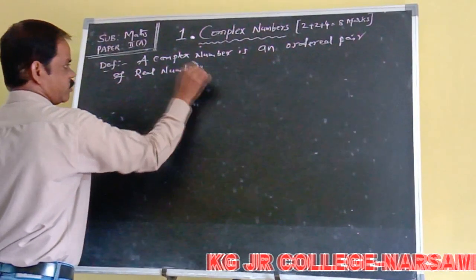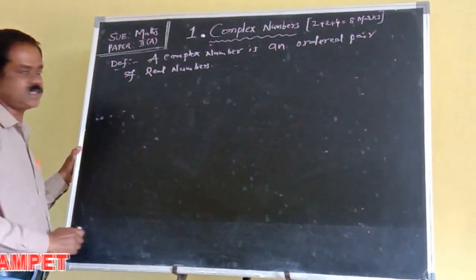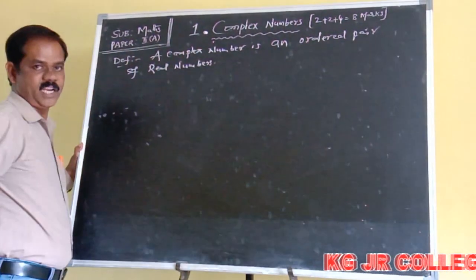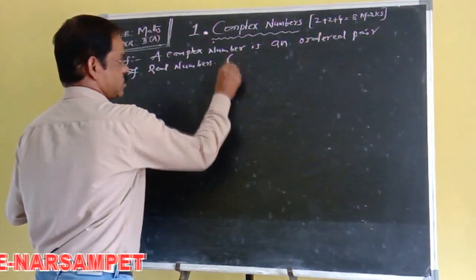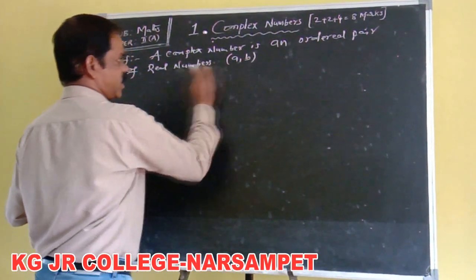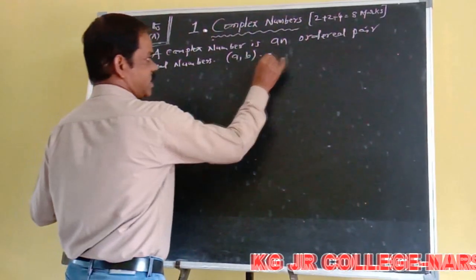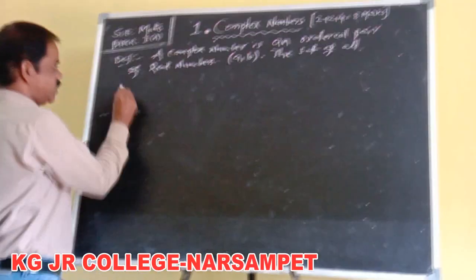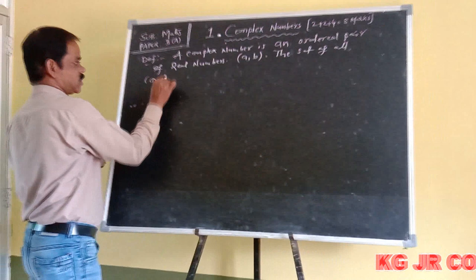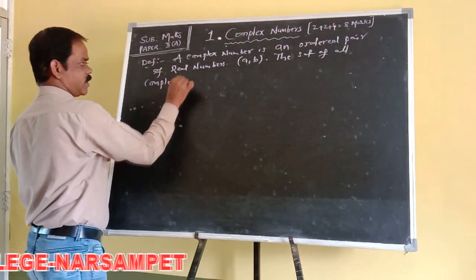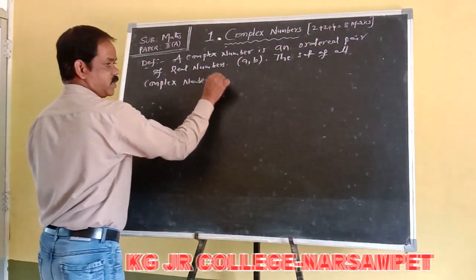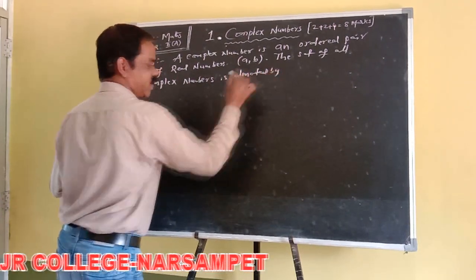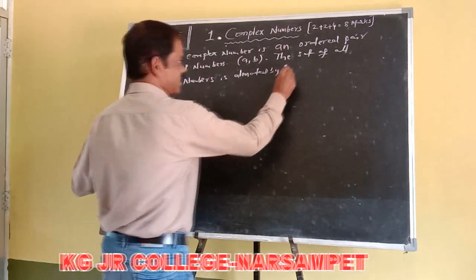An ordered pair of real numbers. What is the definition of complex numbers? A complex number is an ordered pair of real numbers. The set of all complex numbers is denoted by capital C.